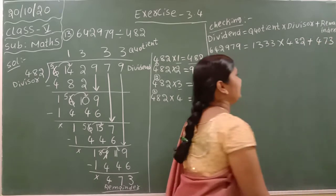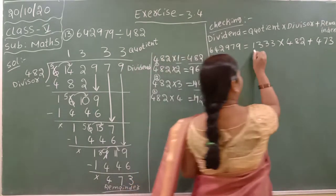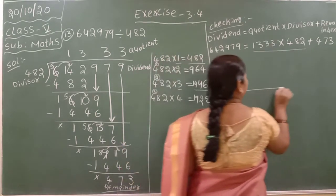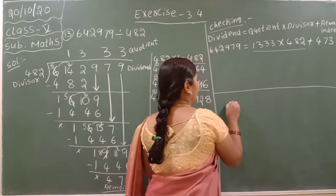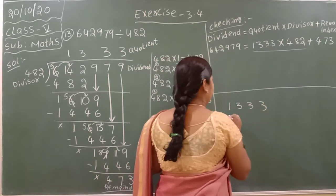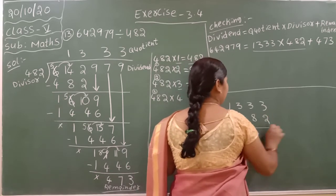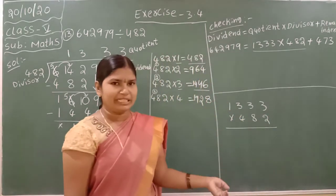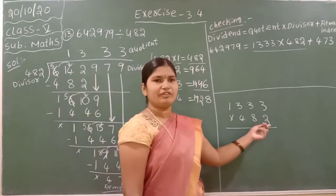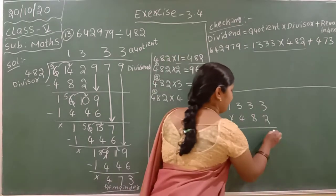Now you have to check if our answer is right or wrong. Write down the checking formula: Dividend is equal to Quotient into Divisor plus Remainder. The dividend is 642979, quotient is 13332, divisor is 482, remainder is 473. Now first you can multiply these two numbers: 1333 into 482. It is 3-digit multiplication. First, ones place — 2 given, 4 digits: result digits 2, 3, 6, 2, 3, 6. Place completed means keep zero in the ones place.